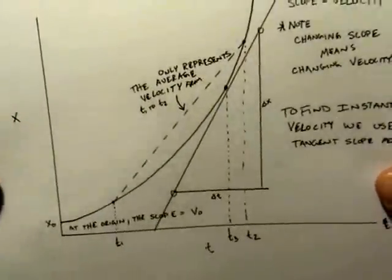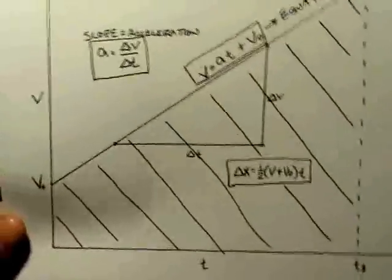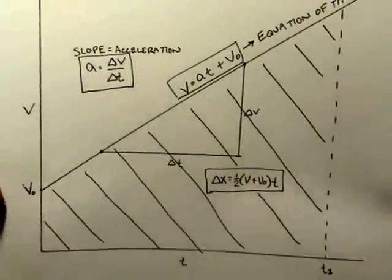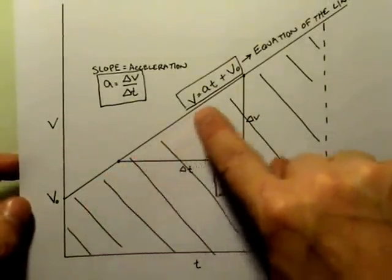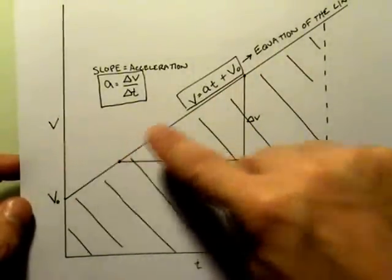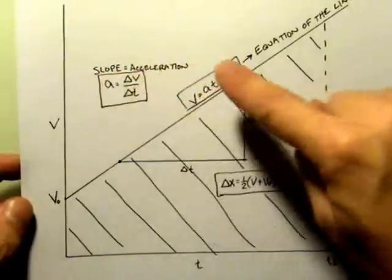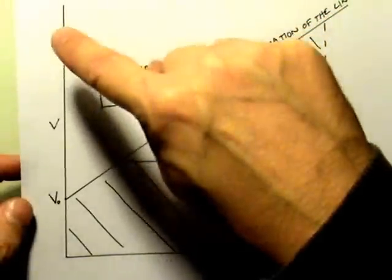And this graph, if I were to make a VT graph for that same motion, then I would find that I would see a straight line sloping upward as I got higher and higher velocities as time goes on.